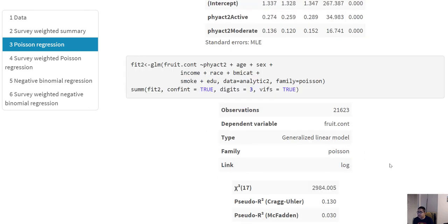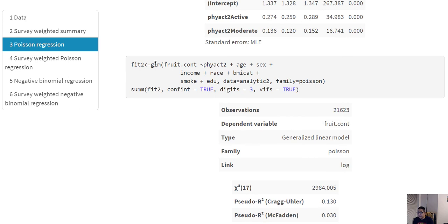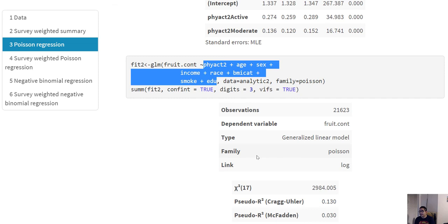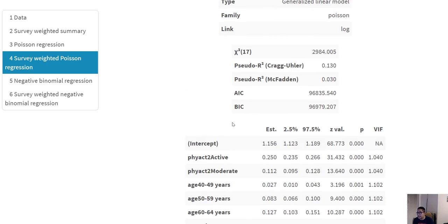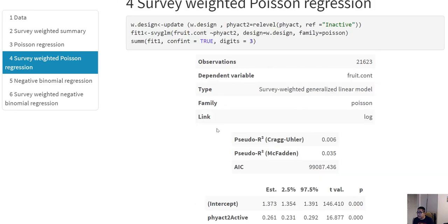Similarly, you can use another Poisson regression where you are now fitting the regression with more covariates, and you can again get the coefficients for those using the sum function from the jtools package.